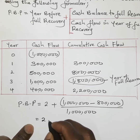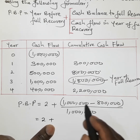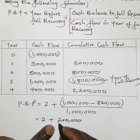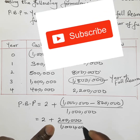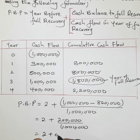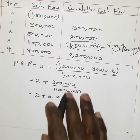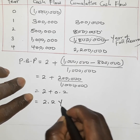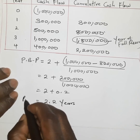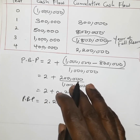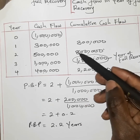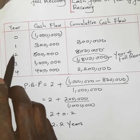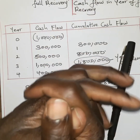So the payback period is two plus two hundred thousand divided by one million, which equals two plus 0.2, giving a payback period of 2.2 years. This means Project C will take 2.2 years to fully recover the one million that was invested. This makes sense because one million falls between the cumulative values of eight hundred thousand and one point eight million — that is, between year two and year three. Please subscribe for more videos, thank you.